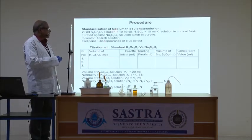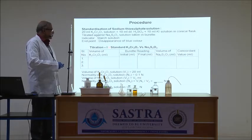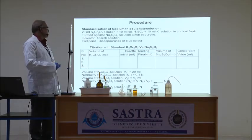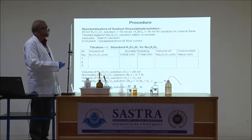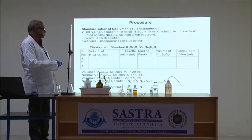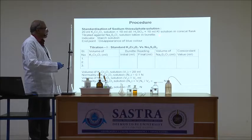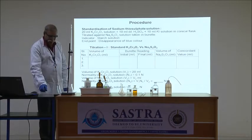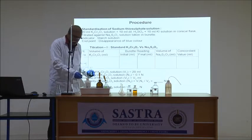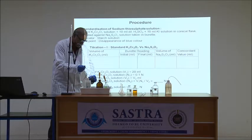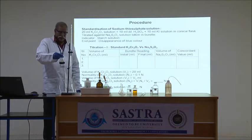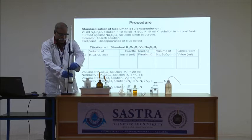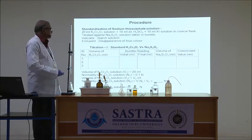Reaction one is the standardization of sodium thiosulfate solution: standard potassium iodate solution versus sodium thiosulfate solution. The sodium thiosulfate solution is taken in a conical flask. Dilute sulfuric acid is added, and potassium iodide solution is added. The solution is titrated against sodium thiosulfate solution. When the solution becomes pale iodine color, starch indicator is added, giving a blue color. The titration is continued until the endpoint, which is the disappearance of the blue color.